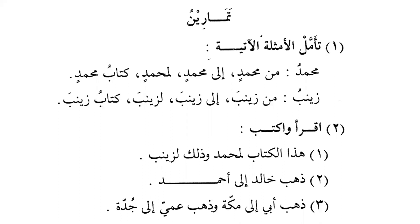Now we have the following examples. The noun Muhammad is flexible - we say it is Munṣarif. It has three states and three forms. When it is Majroor it can accept Kasra or Kasratan. For example, Min is Harf-e-Jar, and after Min we see it is Majroor: Min Muhammadin. Similarly after Ila and Li: Li Muhammadin. And Kitabu Muhammadin - here it has Kasra because it is used as Mudaf-ilayh.